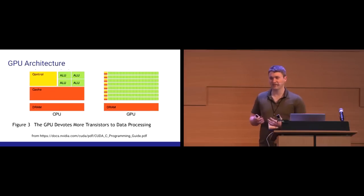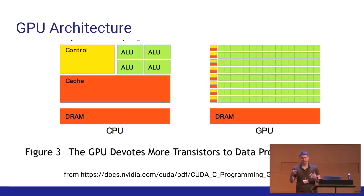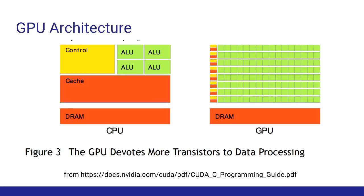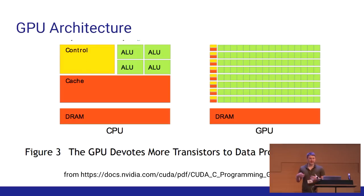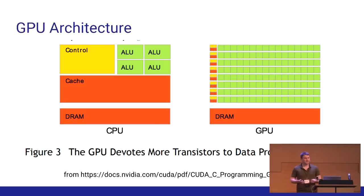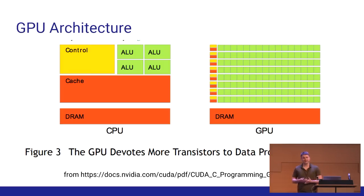Looking at the architecture diagram helps us understand why. In the CPU, a large portion is dedicated to control and caching — interpreting if statements, while loops, and keeping memory close to avoid going into RAM — with relatively fewer transistors for arithmetic units. In the GPU, relatively little is dedicated to control and caching, so more transistors go to arithmetic operations. This is why for simple arithmetic that doesn't involve a lot of control flow, the GPU can run much faster.